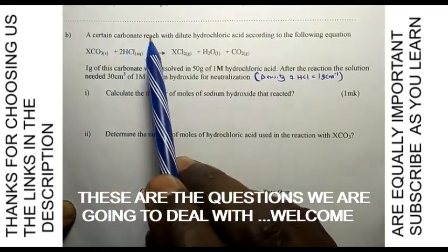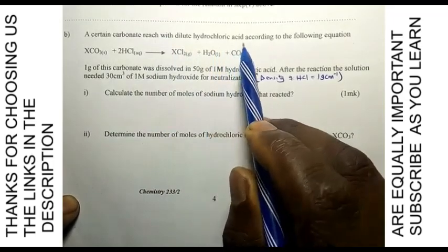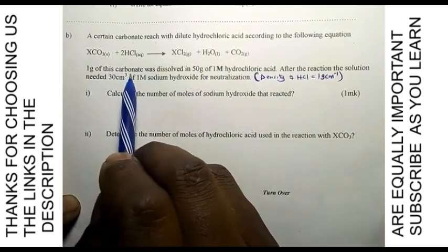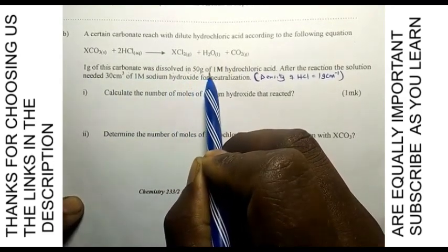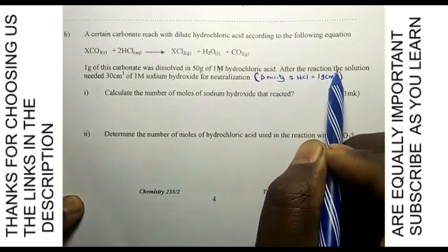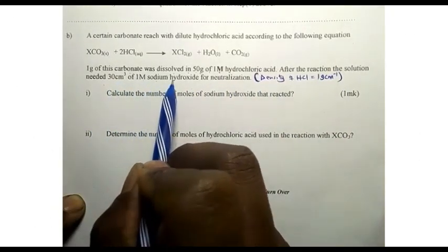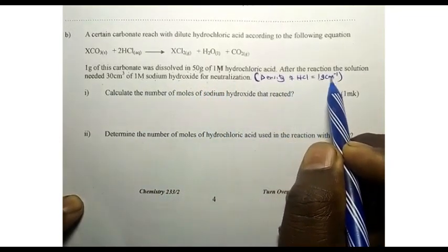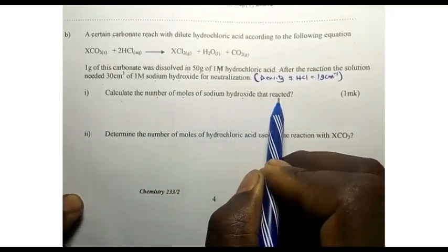A certain carbonate is supposed to be reacted with diluted hydrochloric acid according to the following equation. 1 gram of this carbonate was dissolved in 50 grams of 1 molar hydrochloric acid. After the reaction, the solution needed 30 cm³ of 1 molar sodium hydroxide for neutralization. The density of HCl is 1 gram per cm³. The first question: calculate the number of moles of sodium hydroxide that reacted.